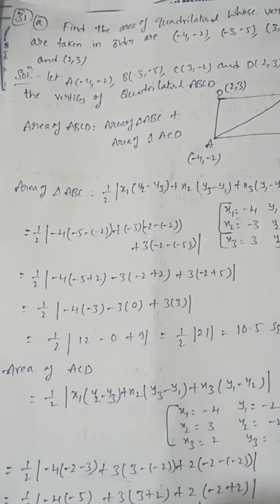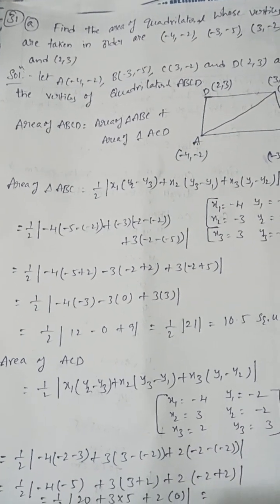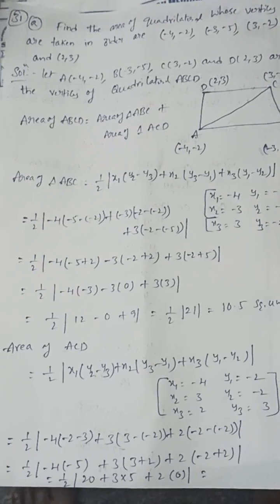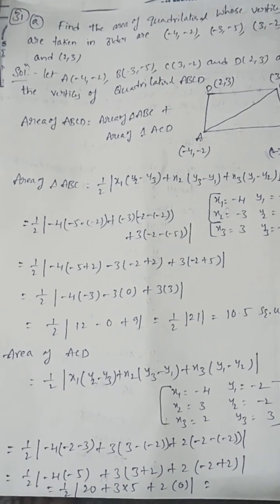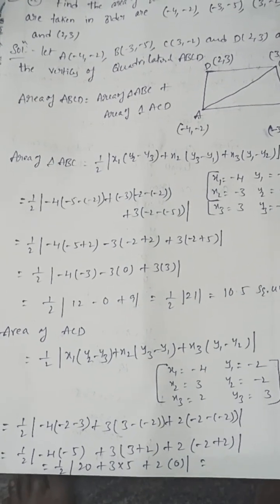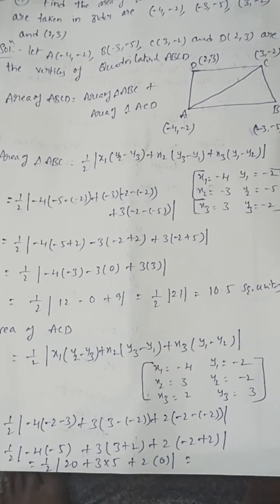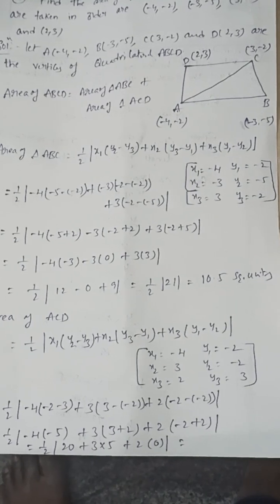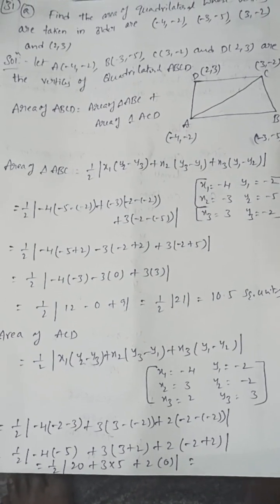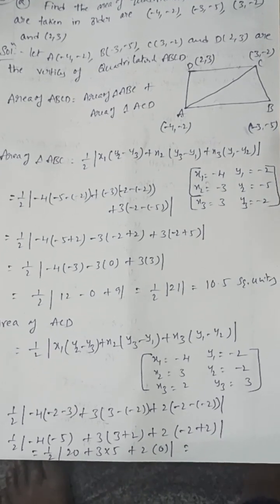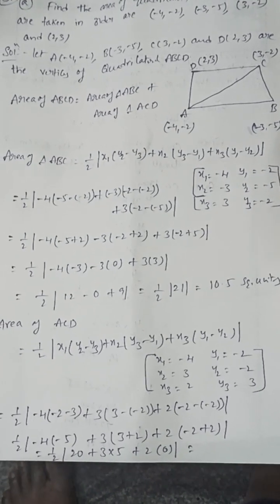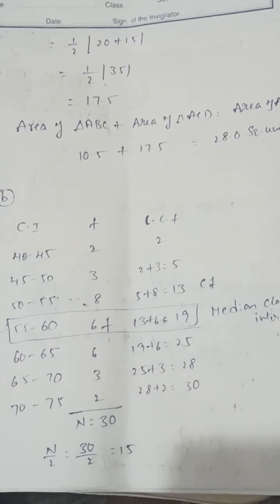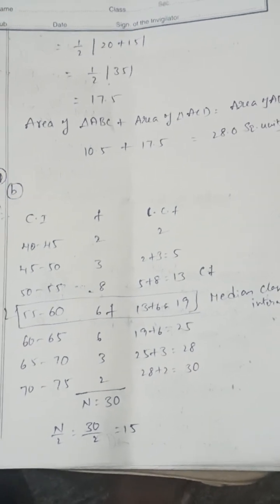Find the area of the quadrilateral whose vertices are given. A, B, C, D are the vertices; construct diagonal AC to form two triangles. Area of triangle ABC = 10.5 square units; area of triangle ACD = 17.5 square units. Area of quadrilateral = sum of the two triangle areas = 28 square units.